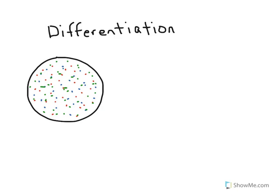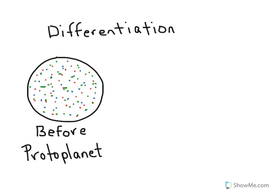We're going to look at a process that takes place when planets form called differentiation. When a planet first forms, it is a mixture of all the materials available in that particular region of space. As you can see in this first picture, red, blue, and green represent different materials — they're all evenly mixed throughout our planet. This would be what's called a proto-planet.